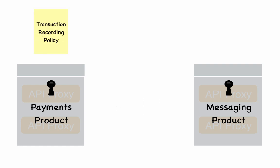You'll create a transaction recording policy for each product that you want to monetize. A transaction recording policy lets you define what Apigee should look for in your API transactions to calculate charges, revenue sharing, and refunds for API usage. For example, you can tell Apigee what constitutes a successful transaction that should be charged, or what the net or gross price of a transaction is so that revenue sharing can be done.